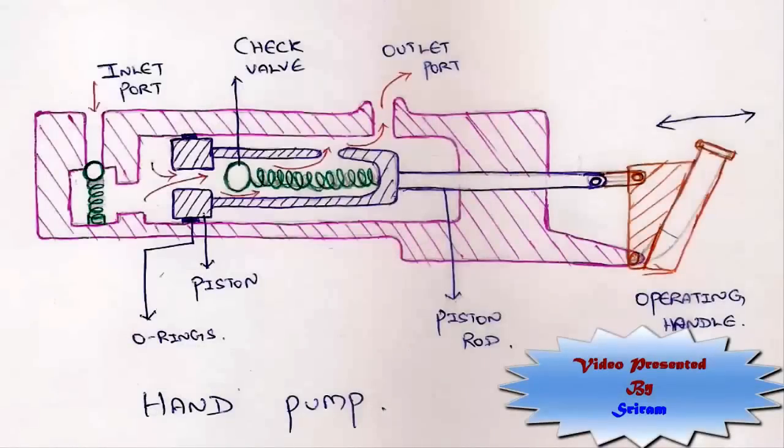Here is the cross sectional view of a reciprocating hand pump which is used normally on the hydraulic oil or lube oil lines for transferring in case of emergency.